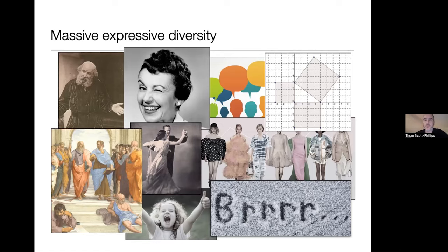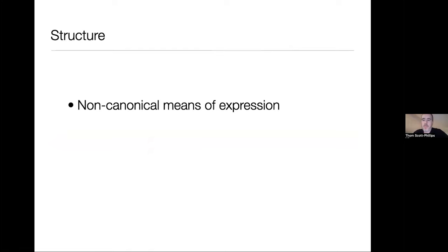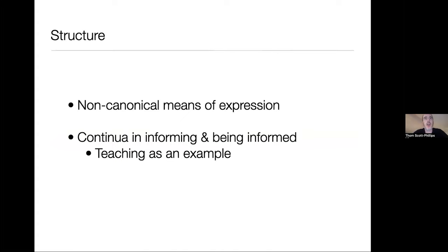So there is this enormous diversity in human expression, and I'm going to argue there's a very large amount of cognitive unity underpinning that. I'm going to talk about some non-canonical means of human expression to motivate some of the important distinctions, and then provide a framework to make sense of these non-canonical means and the diversity, by describing two continua: one in ways of informing one another, and one in ways of being informed by others. And I'll give a specific example of teaching — a short video, just a minute long — but it contains a lot of diversity in quite an ordinary case of human interaction.